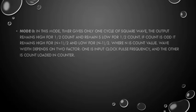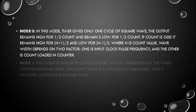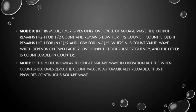Mode 0: the timer gives only one cycle of square wave. The output remains high for half the count and low for the other half. If the count is odd, it remains high for (N+1)/2 and low for (N-1)/2, where N is the count value. Wave width depends on the input clock pulse frequency and the count loaded in the counter. Mode 1: this mode is similar to Mode 0 but when the counter reaches zero, the counter value is automatically reloaded, providing a continuous square wave.